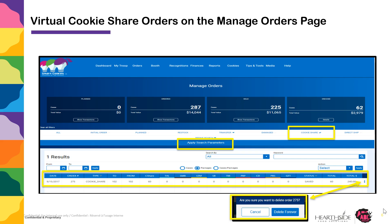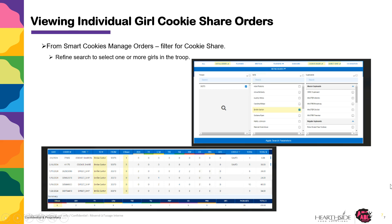If you wish to see individual girl cookie share orders, you can further navigate from the Manage Orders screen by filtering for cookie share, and then click Refine Search. Select one or more girls in the troop, and click Apply Search Parameters. You then will be able to see all of the individual girl cookie share orders.